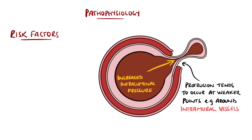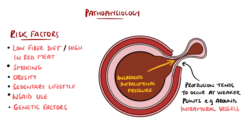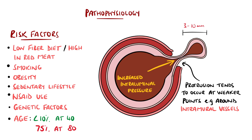The risk factors include a diet low in fibre, which is thought to be the predominant factor in western populations, or diets high in red meat, smoking, obesity, a sedentary lifestyle, and the use of non-steroidal anti-inflammatories. There may also be a degree of heritability. The size is generally between 3 and 10mm and they become more common with age, as under 10% of people at 40 are affected, while 75% of those over the age of 80 are thought to have them.